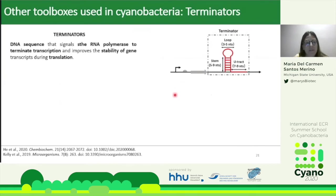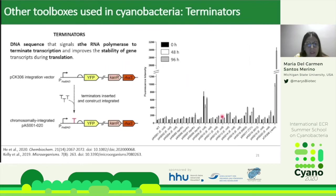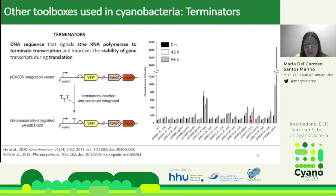Terminators are DNA sequences that signal RNA polymerase to terminate transcription and improve gene transcript stability. In this example, a battery of different terminators — E. coli and synthetic — were tested using a rhamnose promoter with a yellow fluorescent protein reporter, with terminators inserted between the promoter and the fluorescent protein. The control without a terminator produced the highest fluorescence, and the test shows which terminators reduce fluorescence after induction. Most E. coli and synthetic terminators work well, but phage terminators do not.